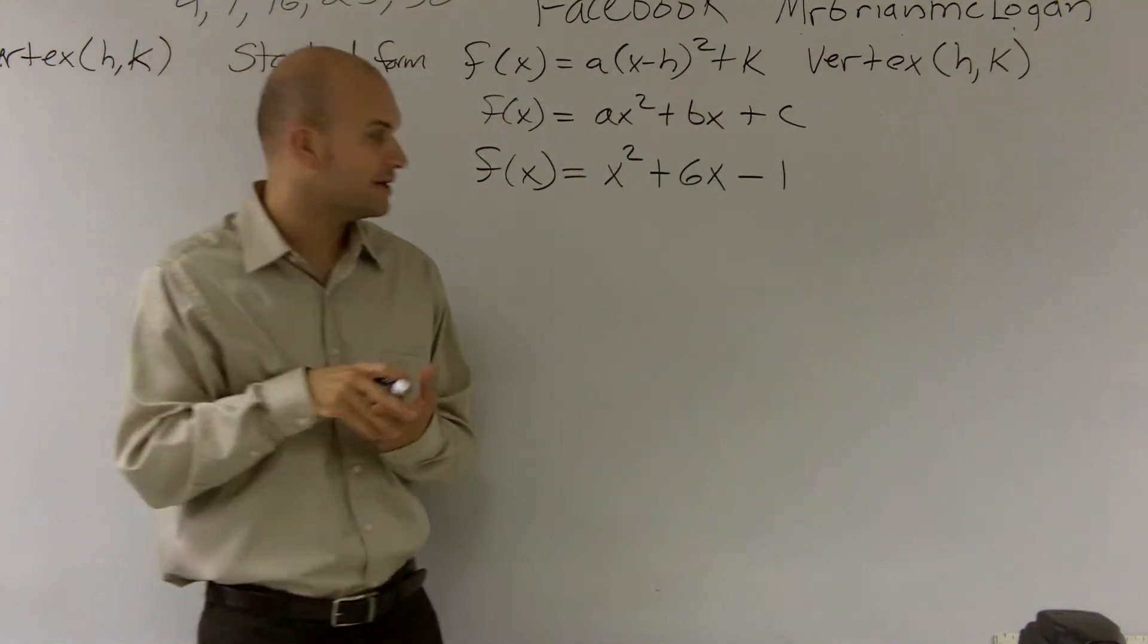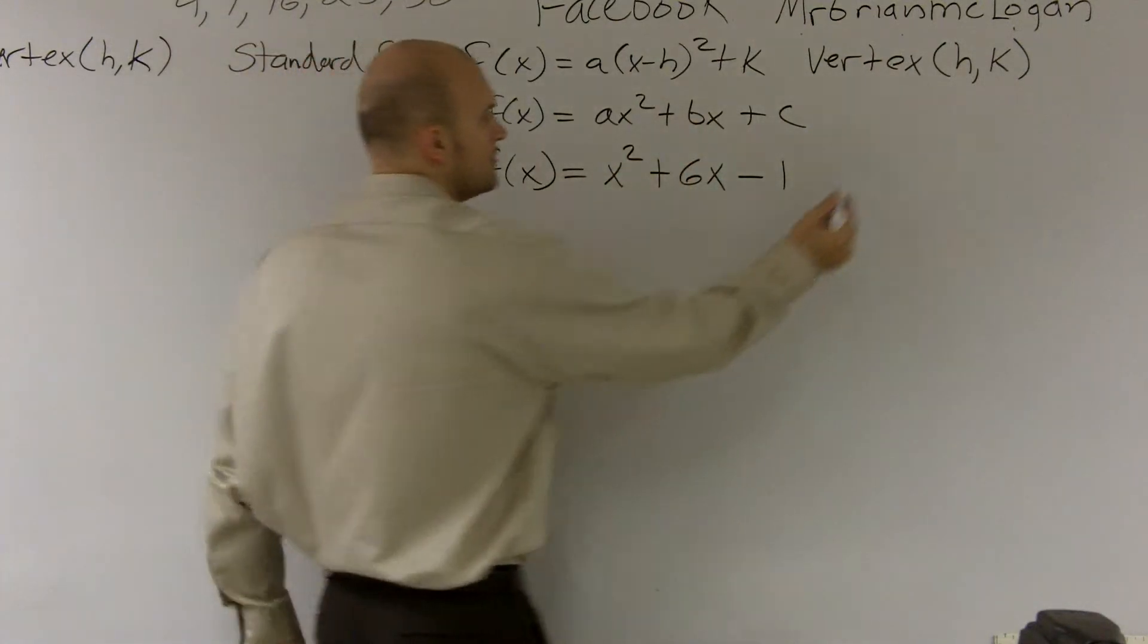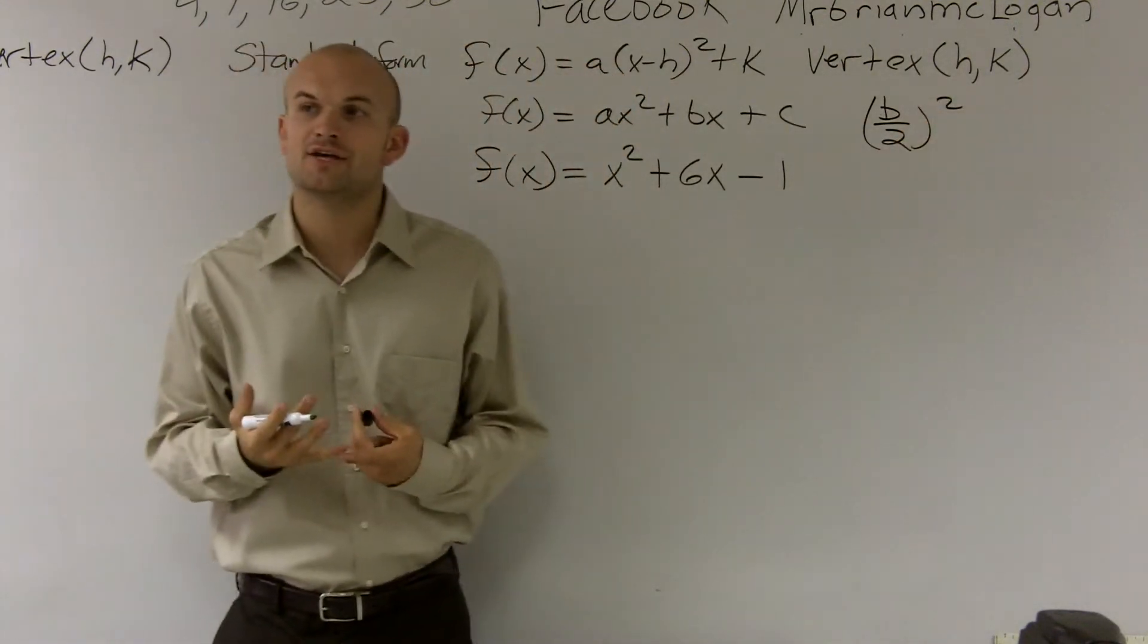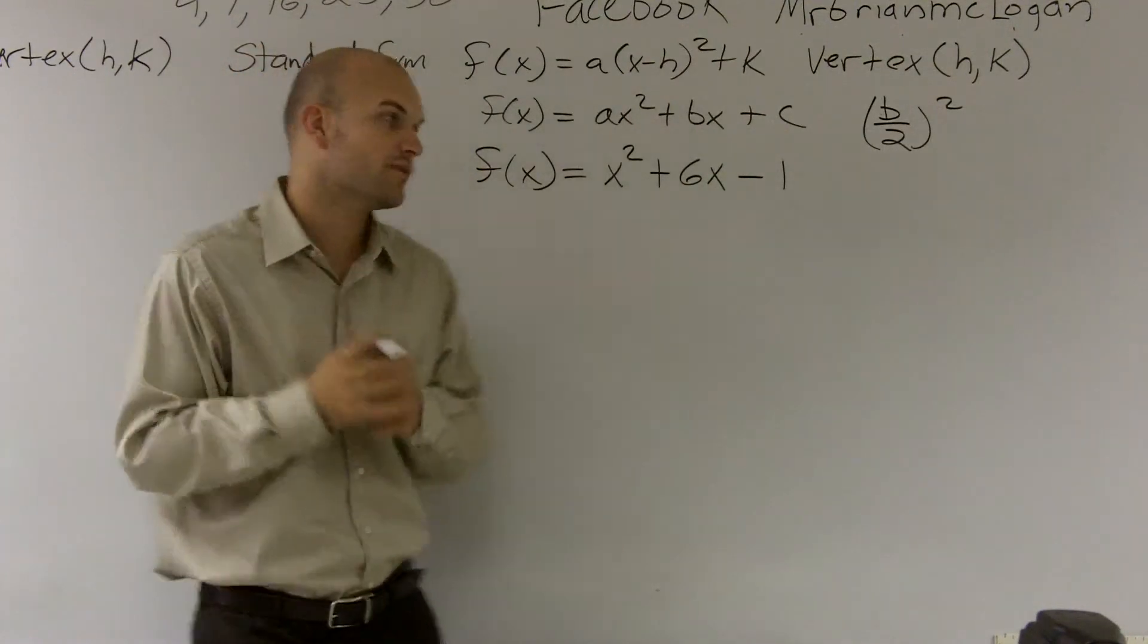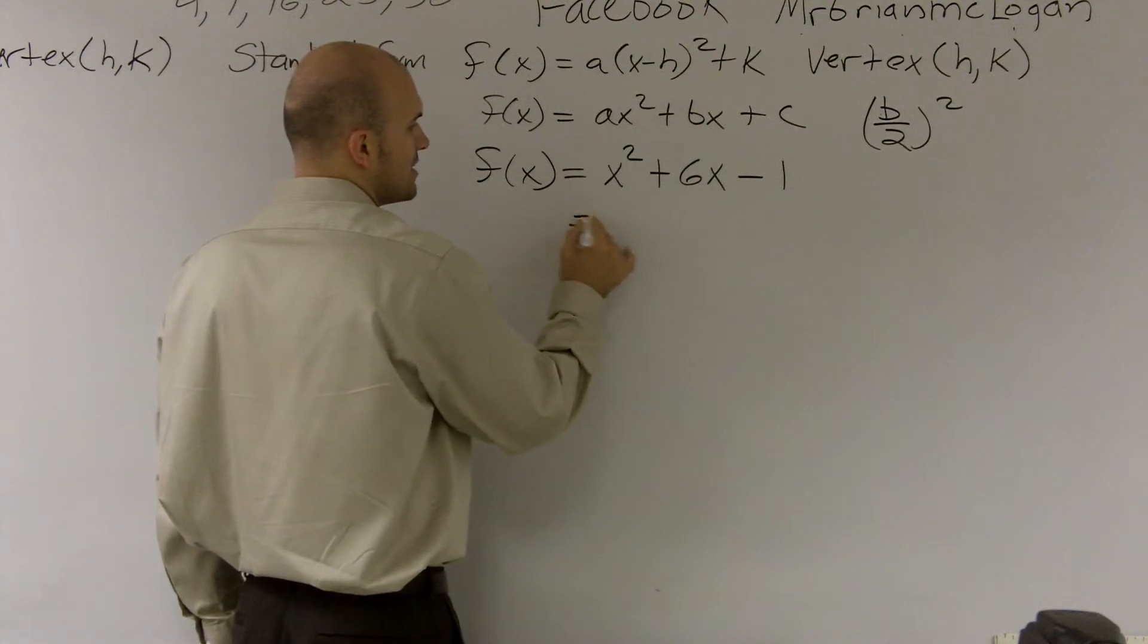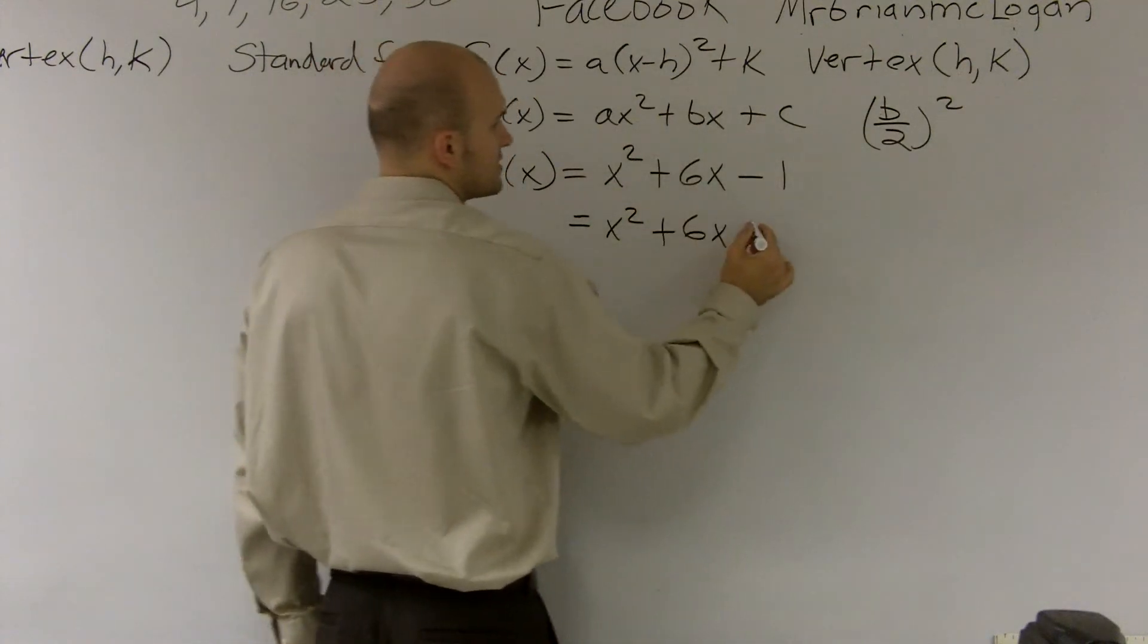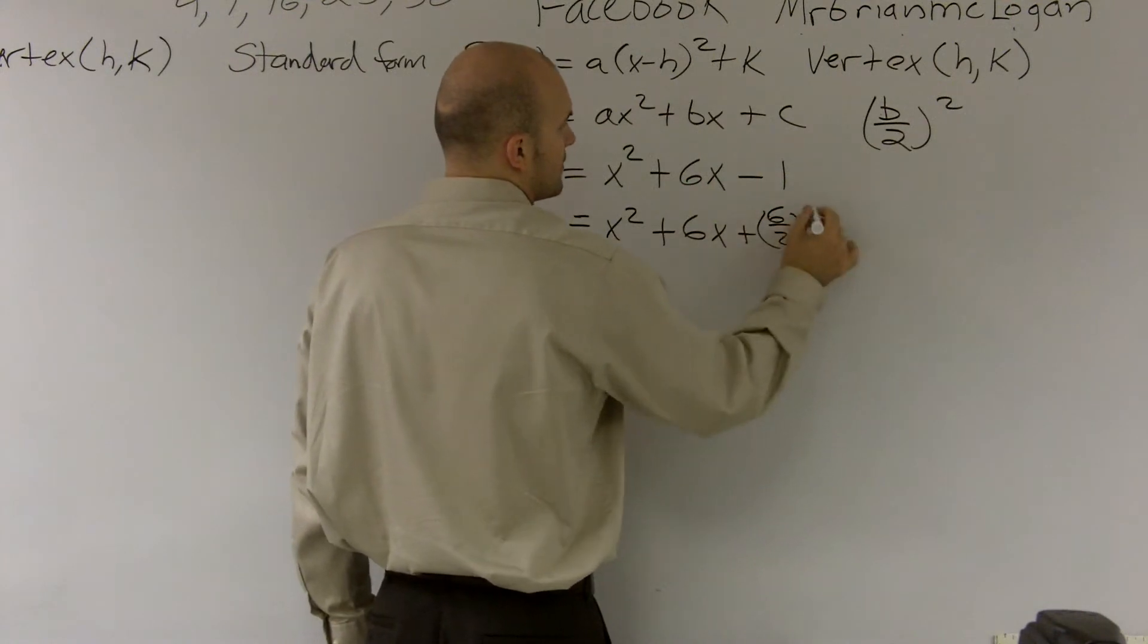Then the next thing we're going to do is we need to determine what our b over 2 squared value is. And by finding that value and adding it to our equation, what that's going to do is give us a perfect square. So what I'm going to do is I'm actually going to separate these. I'm going to write x squared plus 6x and then b over 2, which is 6 over 2 squared.